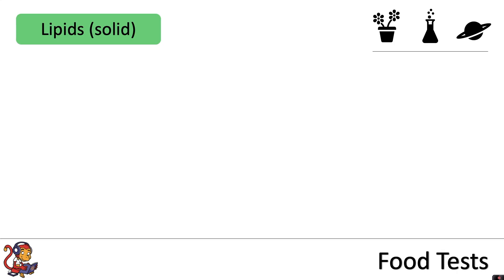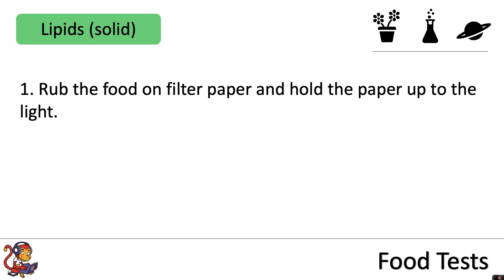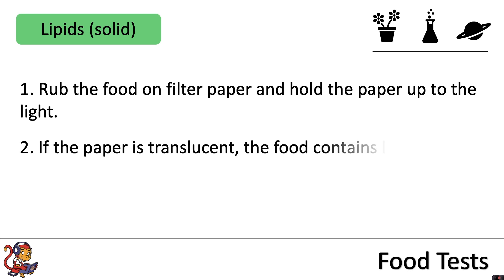When testing for solid lipids you would rub the food on filter paper and hold the paper up to the light. If the paper is translucent the food contains lipids.